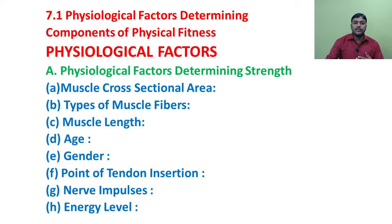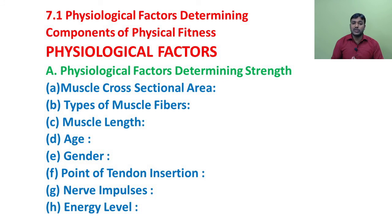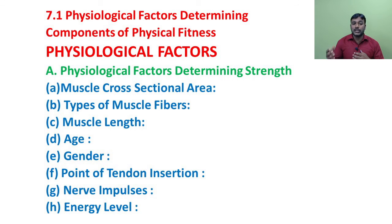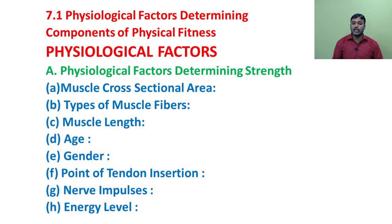The third factor is muscle length. All individuals have different lengths of muscles. Persons with relatively long muscles have greater potential for developing size and strength than persons with relatively short muscles.